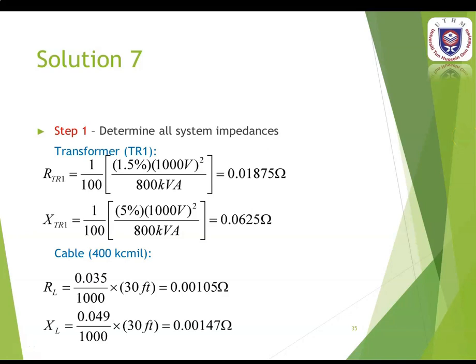For the three-phase solution, there are also 5 steps. The first step is to determine all system impedances. The components to consider are 2 transformers — TR1 and TR2 — and 3 types of cable: 400 kcmil, 8 AWG, and 12 AWG.